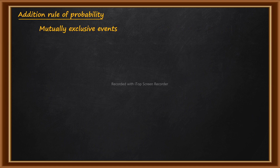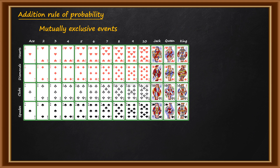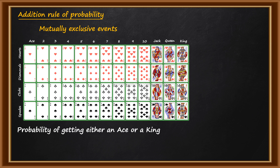To understand mutually exclusive events, we take the example of a deck of playing cards. A playing card deck has 52 cards with four types: Hearts, Diamonds, Clubs, and Spades — 13 cards each, numbered 1 to 10 plus Jack, Queen, and King. Number 1 is also called Ace. Let us suppose we need to find out the probability of getting either an Ace or a King. Here 'either/or' is mentioned, so we apply the addition rule of probability.